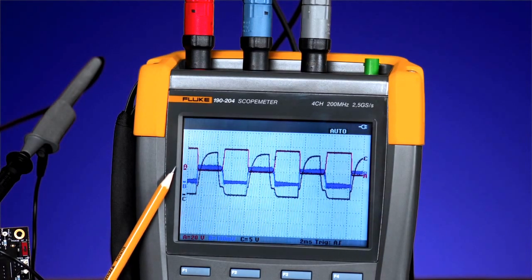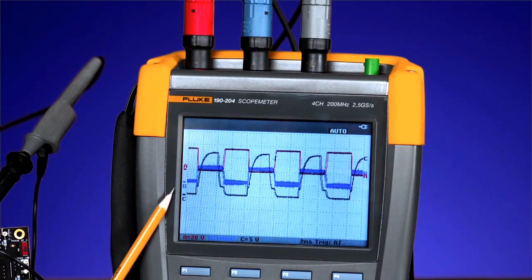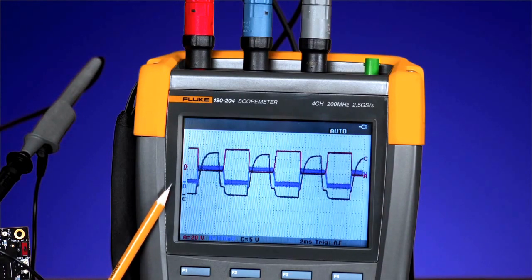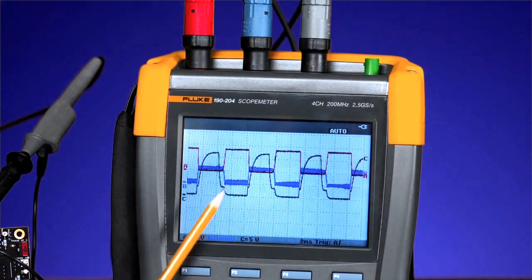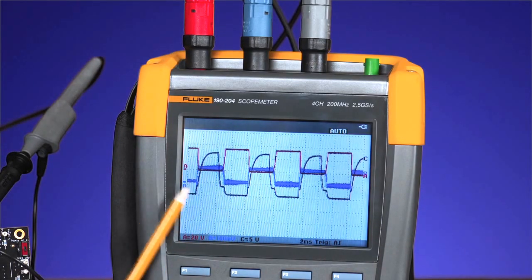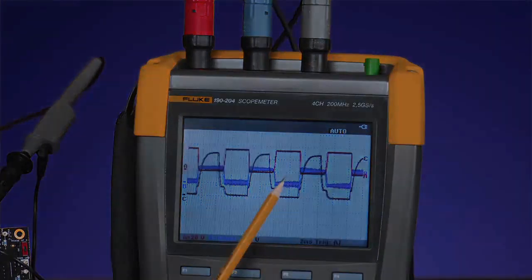You can look at the three waveforms looking at the overall quality. You're also looking for any signs of distortion, transients, or fluctuations that may be causing problems on the circuit.